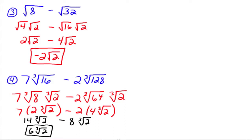Don't forget — if you don't have the little 3 inside the radical symbol for the index, it's understood to be a square root, which means something completely different. You must write the index if it's greater than 2.